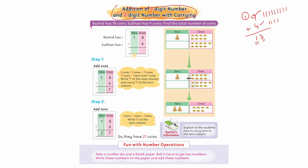اب ہم دیکھیں گے آج بھی carrying کا concept سیکھیں گے، لیکن وہ ہے two digit number میں جب one digit number add ہو تو پھر carrying کس طریقے سے کی جاتی ہے۔ ایک example سے سہارا لیتے ہیں: Rashid has 18 coins, Subhan has 9 coins, find the total number of coins۔